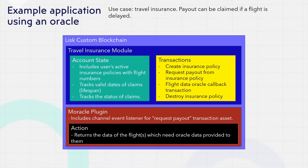It also defines several custom transactions to create an insurance policy, request a payout from an insurance policy, a callback transaction to process data from oracles, and a transaction to cancel an insurance policy. It also includes a Moracle plugin which provides a method that listens for specific transactions in order to notify oracles of a data request.